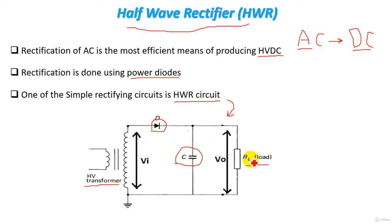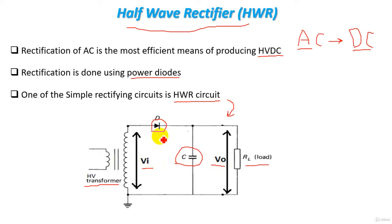The input voltage is the secondary voltage of the high voltage transformer. The output voltage is across the load. We can predict that the output voltage will be high voltage DC, while the input voltage is AC. So the diode converts the input AC voltage into output high voltage DC.